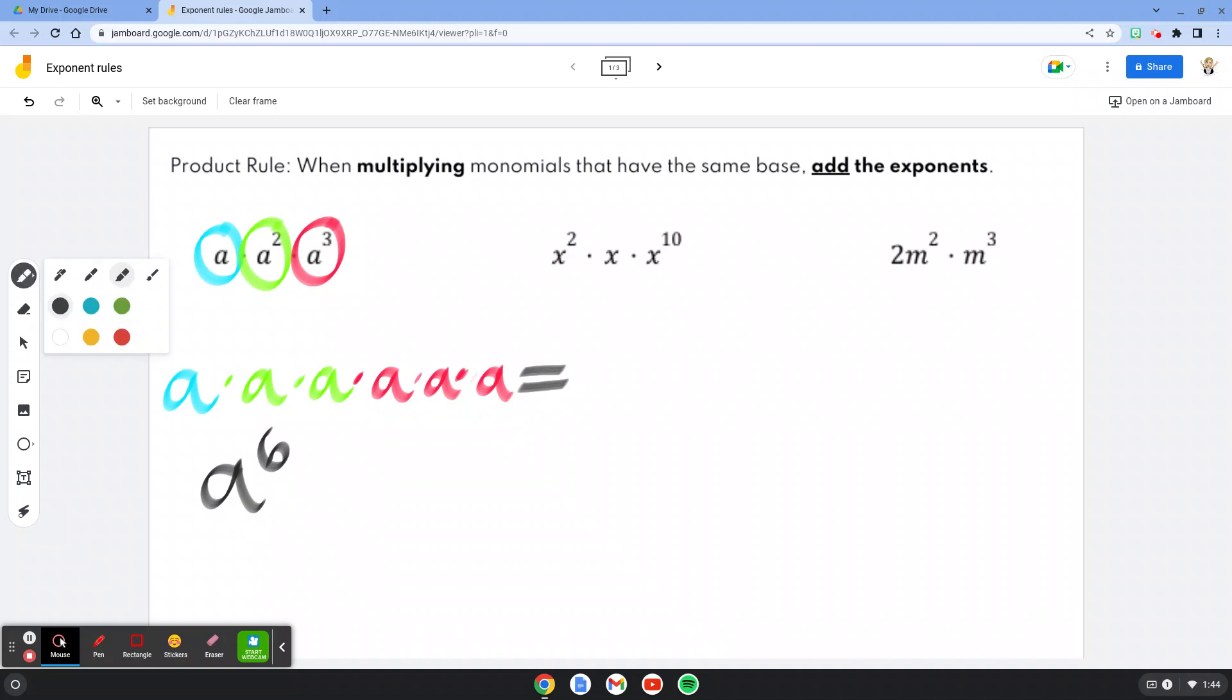Now there's a shortcut, so you don't have to write it out like this every time, especially when we get a lot of bigger exponents. So if we only have an a, we see that it's just one a, so I can add a little one here. And then what I can do is add the exponents together. So one plus two plus three to tell me what my exponent should be, which again is six.